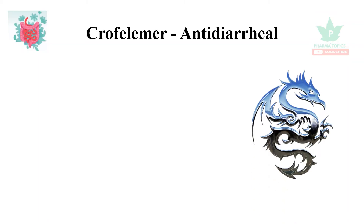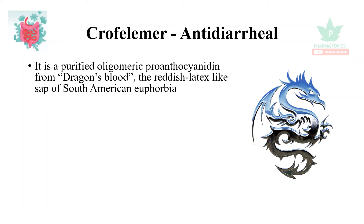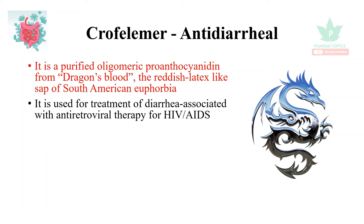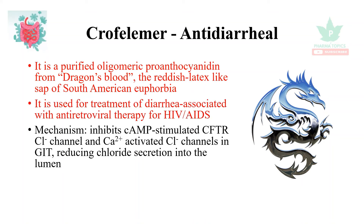The next drug is crofelemer — just remember the dragon. It is a purified oligomeric proanthocyanidin obtained from the dragon's blood, the reddish latex-like substance from the sap of a South American euphorbia plant. It is used for the treatment of diarrhea associated with antiretroviral drugs or anti-AIDS drugs. Its mechanism is that it inhibits the cyclic AMP-stimulated CFTR chloride channel and calcium-activated chloride channels in the gastrointestinal tract.